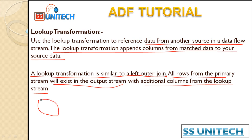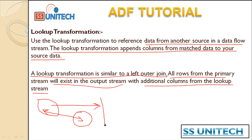For example, we have one source and we want to get the data, and here we have a lookup source. This lookup source will match based on certain column values. We want to see all the columns from the source table and from the lookup table. The matching column will have the data, and non-matching columns from the source will have null - this is the left outer join we have already seen.